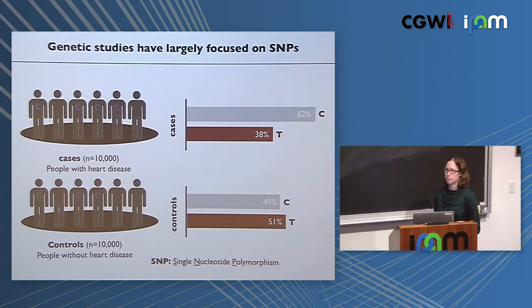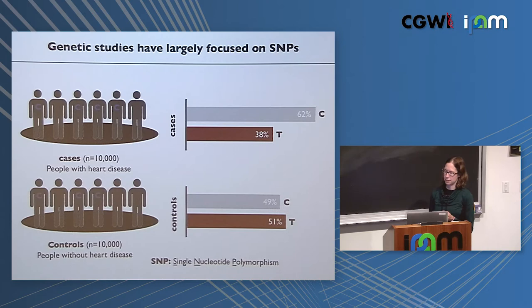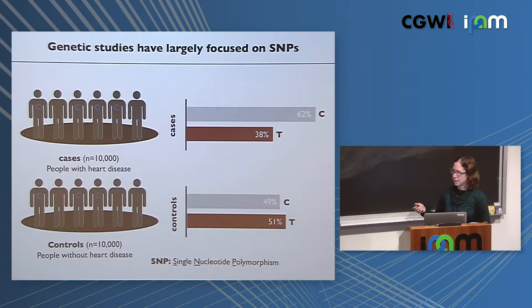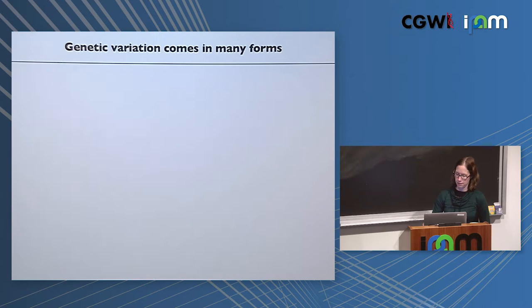A SNP is a single base pair change, such as from a C to a T. We ask whether cases have a higher frequency of one allele versus another. But that's just one window into how our genomes can vary. I'm going to go through a couple of different classes of genetic variation and track in the corner how many de novo variants we might expect for each class.